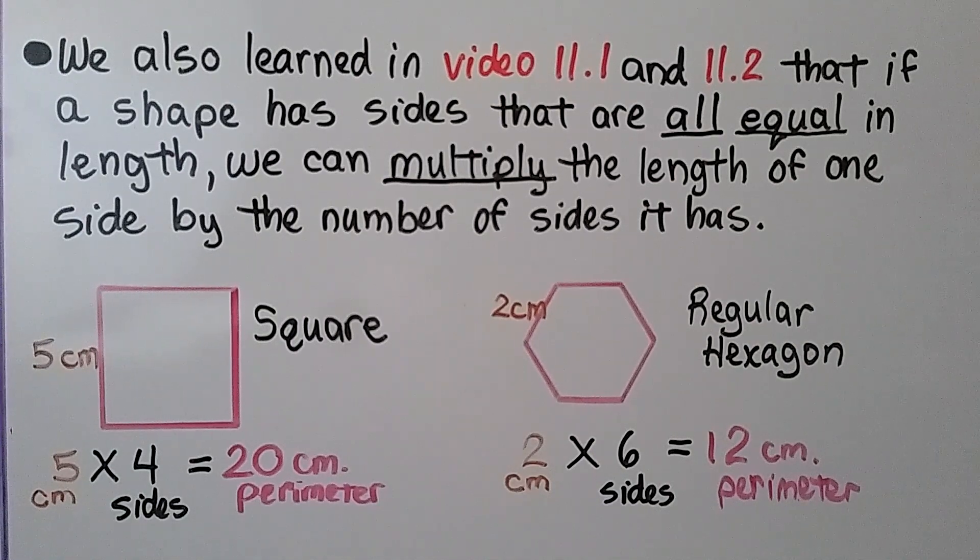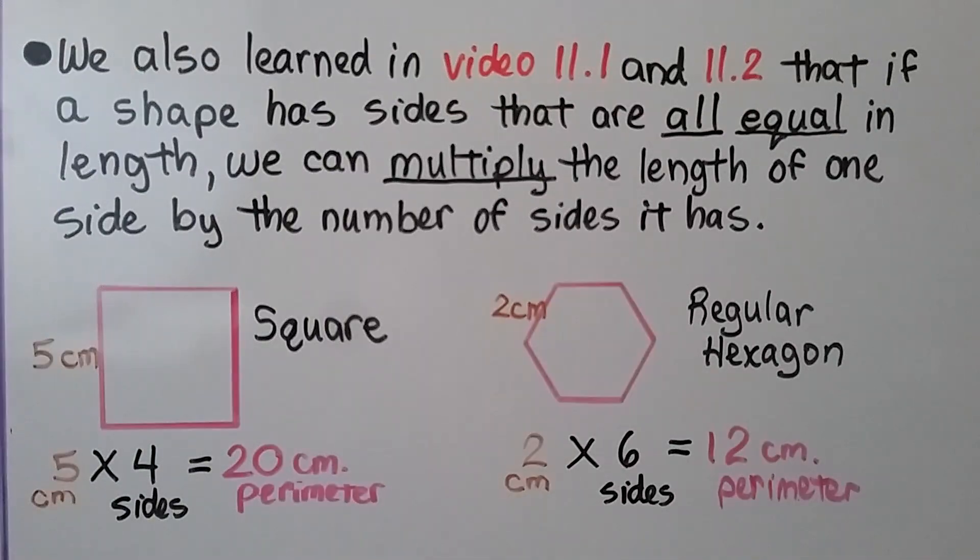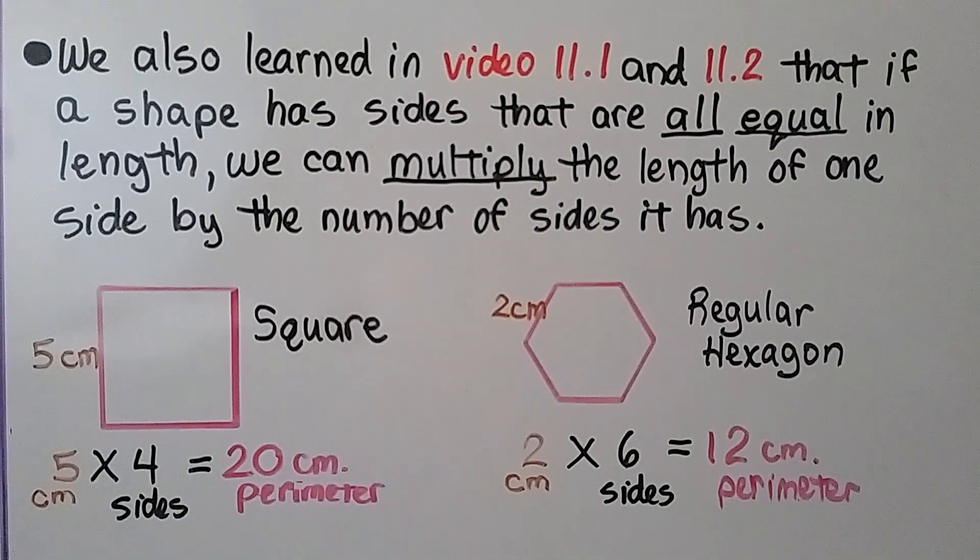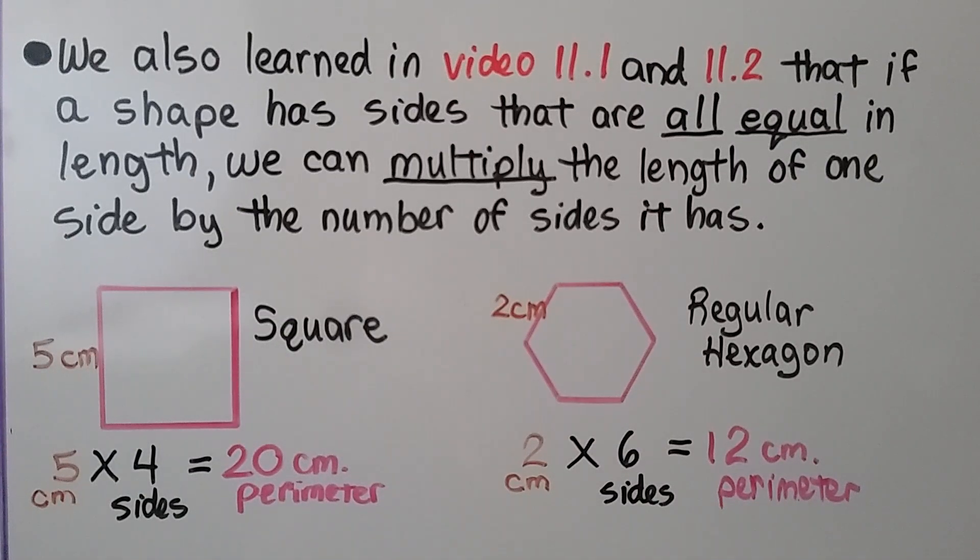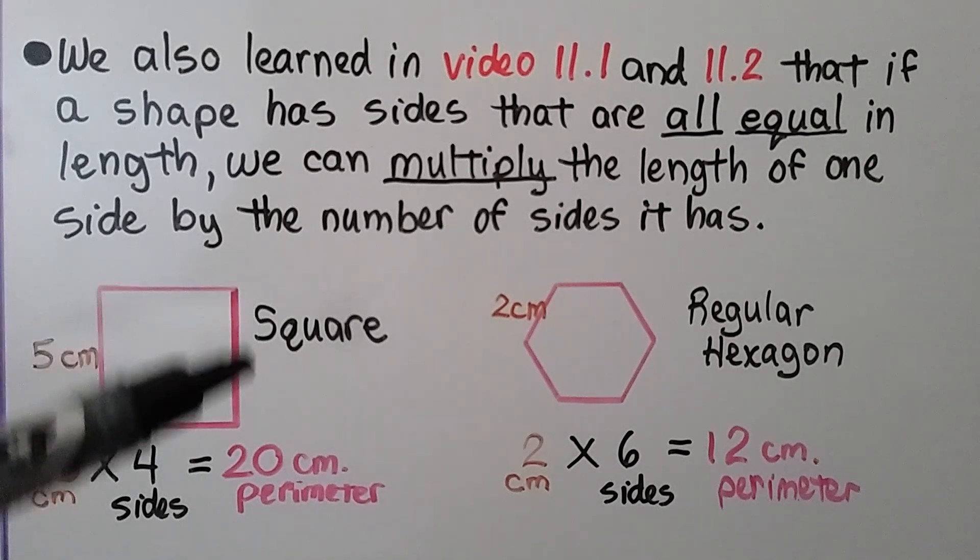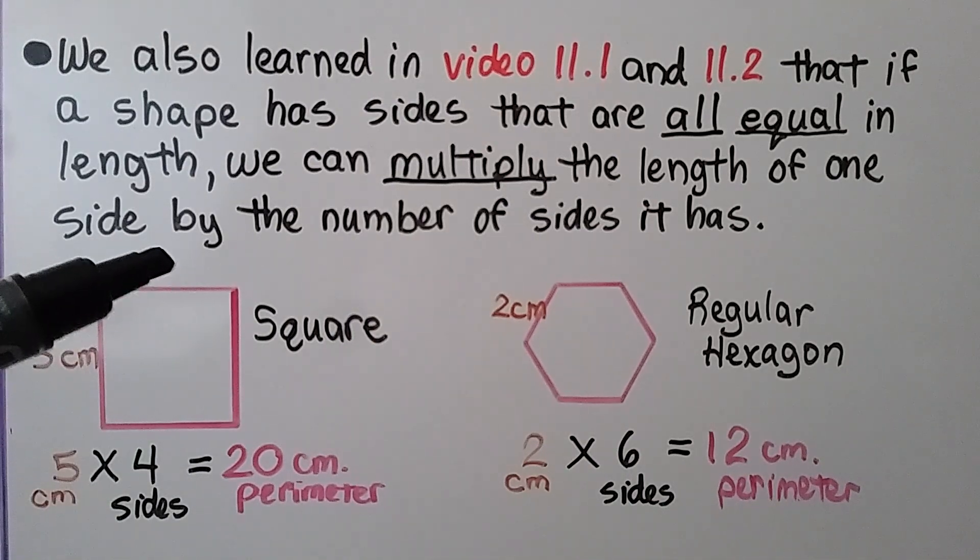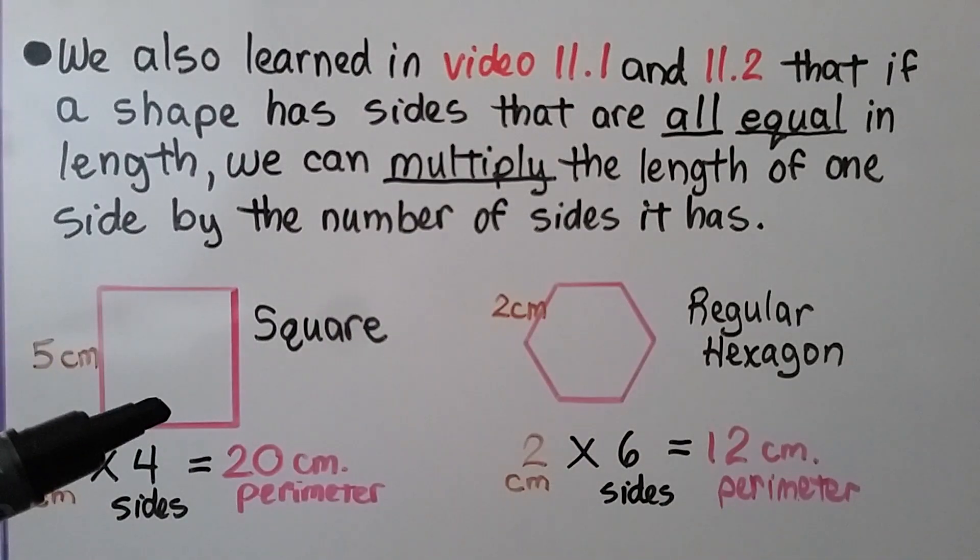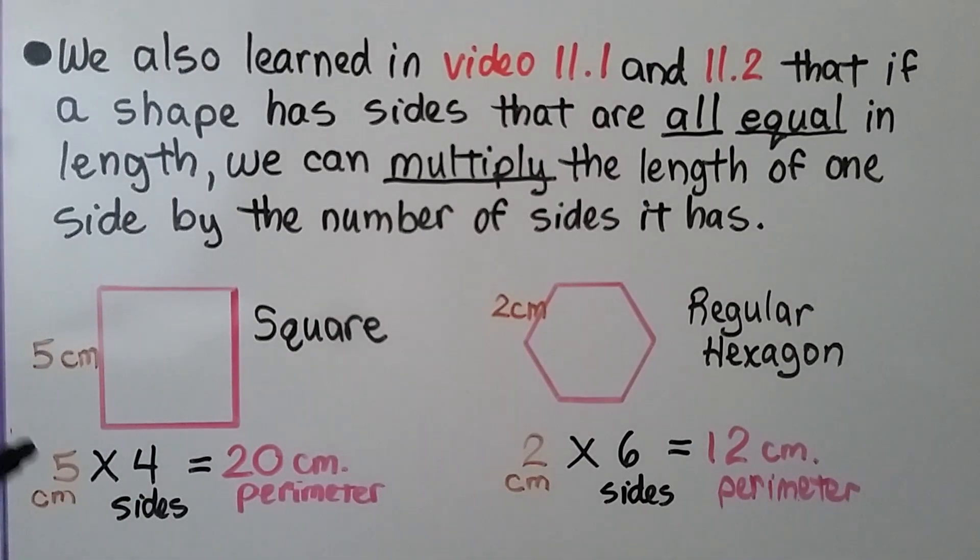We also learned in videos 11.1 and 11.2 that if a shape has sides that are all equal in length, we can multiply the length of one side by the number of sides it has. For a square, we know that this side is 5 centimeters. Well, a square is a polygon that has four equal sides. That means that side's 5 centimeters, that side's 5 centimeters, and that side's 5 centimeters. We can do the 5 centimeters times those 4 sides. That will equal 20 centimeters for the perimeter.